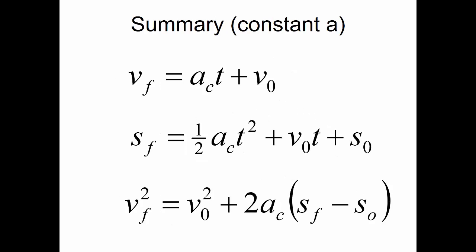So, in summary, when we have constant acceleration, we have three equations that we can use to simplify the problem. First, our final velocity is equal to the constant acceleration times the time plus the initial velocity. Second, our final position is equal to one-half the constant acceleration times the time squared plus the initial velocity times the time plus our initial position. And finally, our final velocity squared is equal to our initial velocity squared plus two times our constant acceleration times our final position minus our initial position.